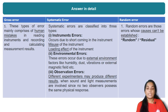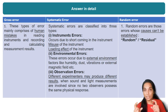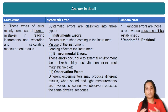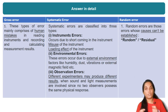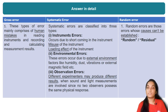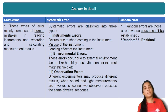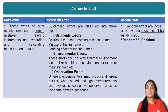Gross errors occur in reading instruments and recording and calculating. There are errors in reading, errors in recording, errors in calculation — these are all human mistakes, making them gross errors. Systematic error involves the instrument, the environment, and the observation error.